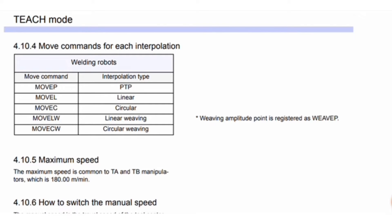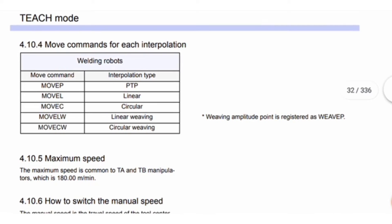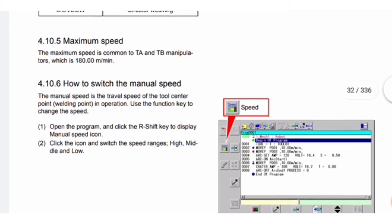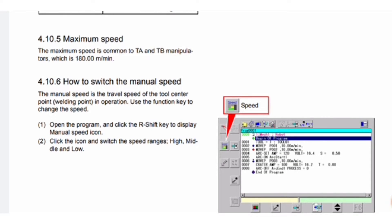Move commands for each interpolation type: Move P — interpolation type PTP; Move L — interpolation type Linear; Move C — Circular; Move LW — Linear Weaving; Move CW — Circular Weaving. The weaving amplitude point is registered as View P. The maximum speed is common to TA and TB manipulators at 180 meters per minute.